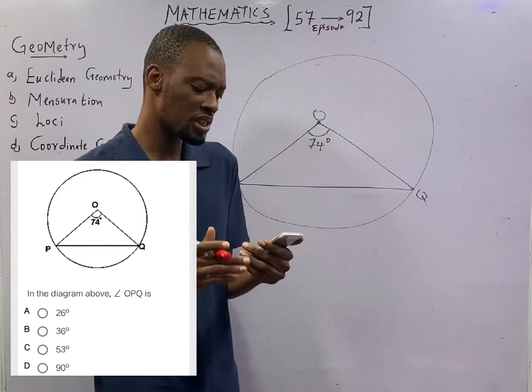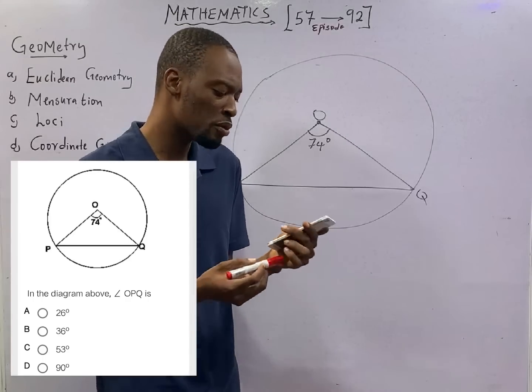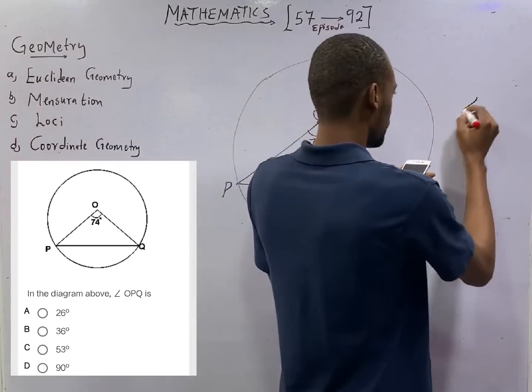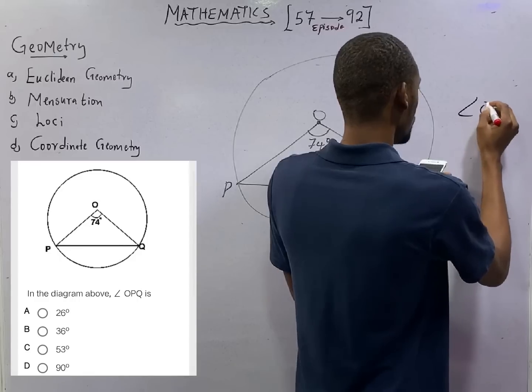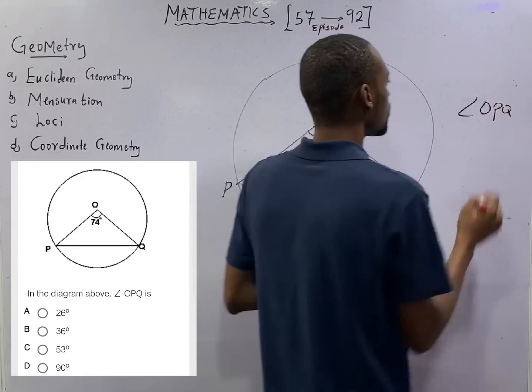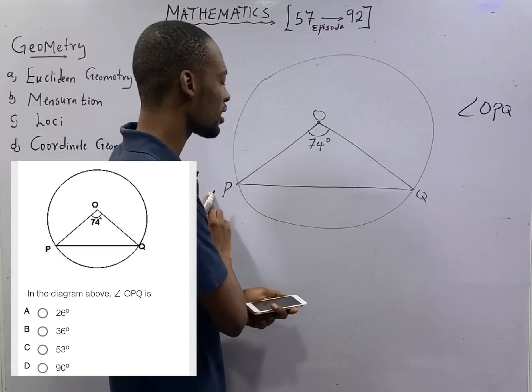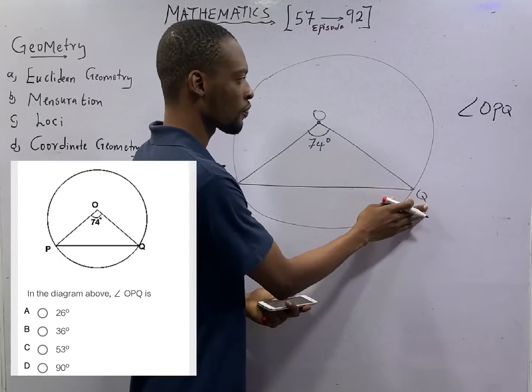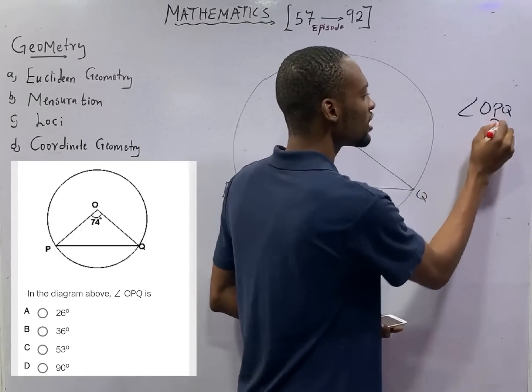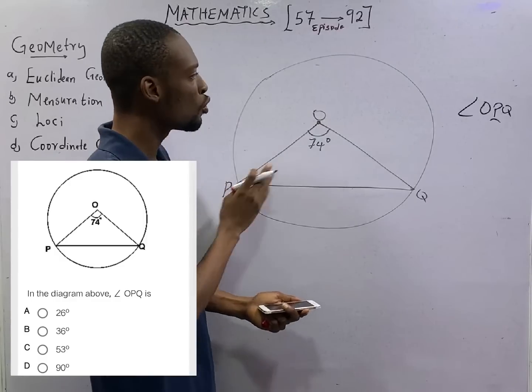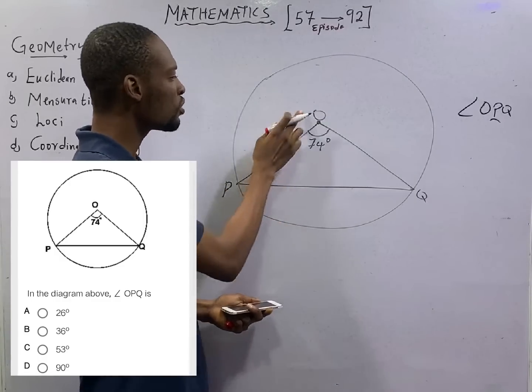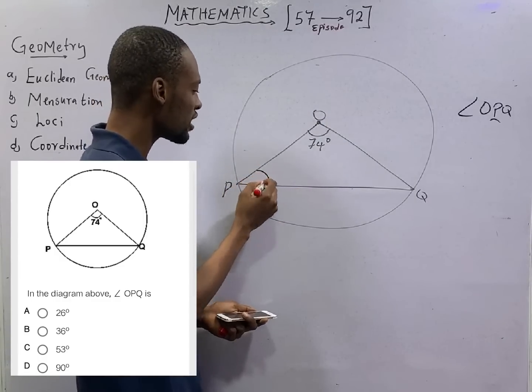This question says, in the diagram above, find angle OPQ. This is O, this is P, and this is Q. The one at the middle, that is where the angle will be. Angle OPQ is the angle between O and P, which is here. Let's call the angle A degrees.